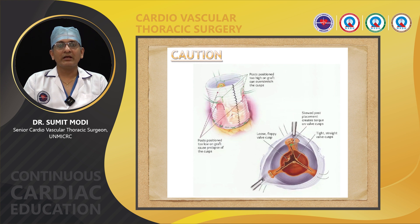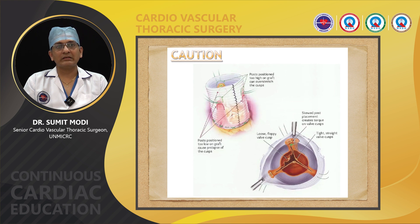There are 2 to 3 key points to keep in mind. If the valve posts are fixed too high on the graft, it can lead to over-stretching of the cusp and aortic regurgitation. Similarly, if the valve posts are positioned too low on the graft, it causes prolapse of the cusp. Therefore, measurement of the cusp height is very important in this operation. The second most important thing is the measurement of the diameter of the aortic annulus and deciding the proper prosthetic size.